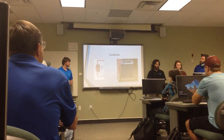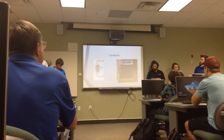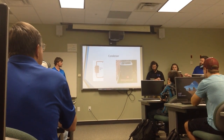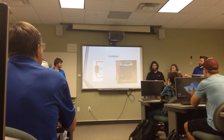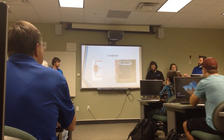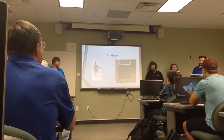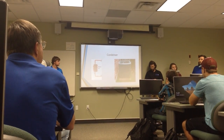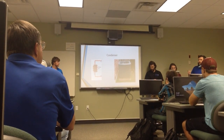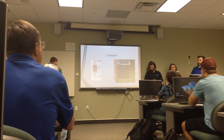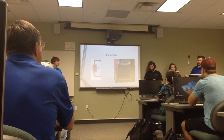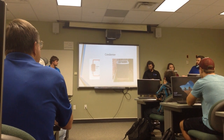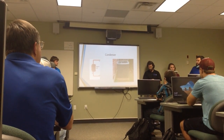Next we have the condenser. Like the compressor, the condenser is located in your outside unit. The condenser is lined with coils filled with a hot fluid, and the fan on top induces flow over these coils, heating up the air and projecting it to the outside atmosphere. This then cools down your fluid and pushes it to the throttling valve.